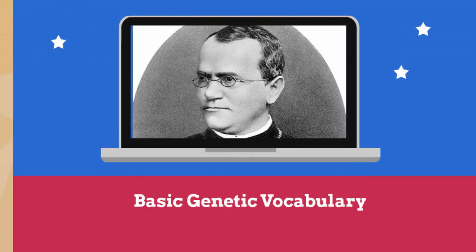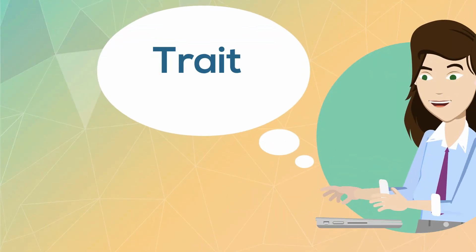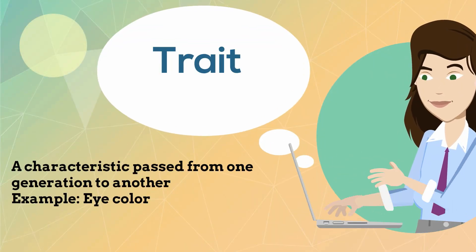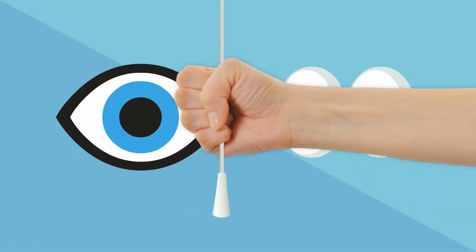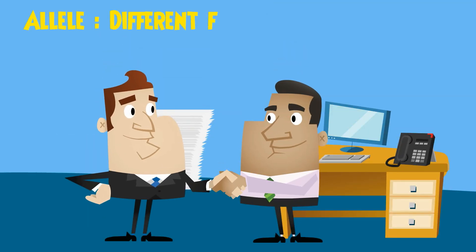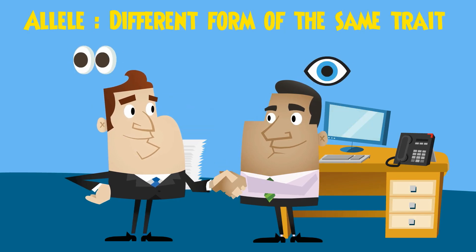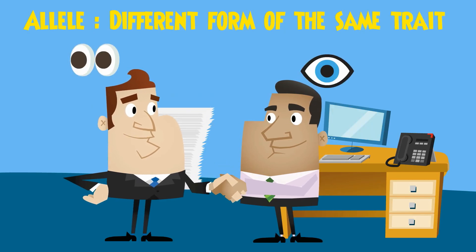A trait is a characteristic that can be passed from one generation to another. An example of a trait would be eye color. An allele is a different form of the same trait. Having different eye color would be an example of an allele.